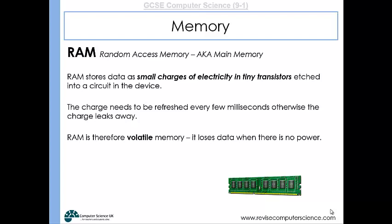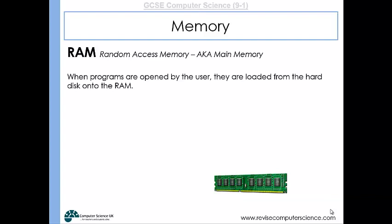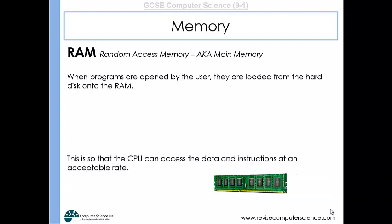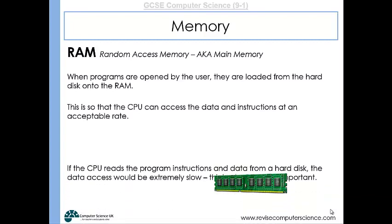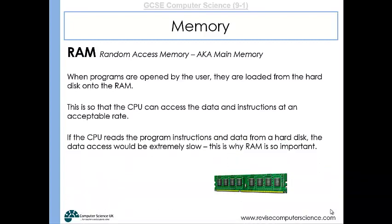When programs are opened by the user they're loaded from the hard disk to the RAM. The whole point of putting programs onto RAM when they are in use is so that it can deliver data to the CPU at an acceptable speed. Secondary storage is very slow and won't be able to keep up with the rate at which the CPU needs data and instructions. RAM is much quicker, so the CPU can access data much faster.